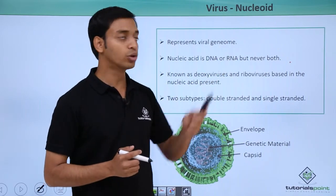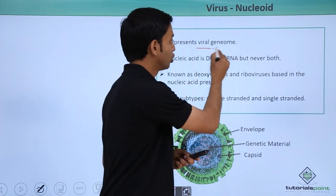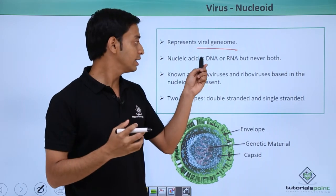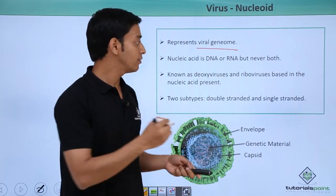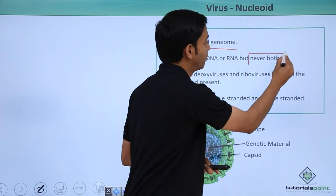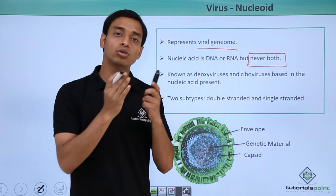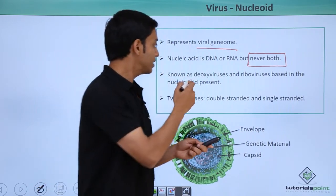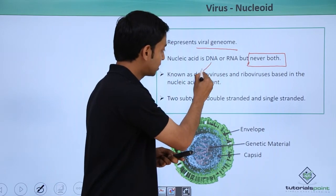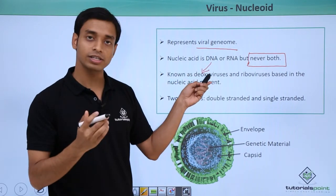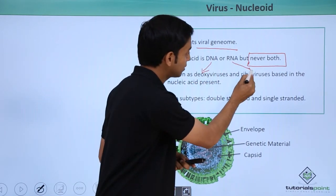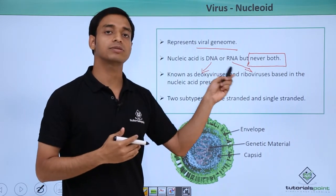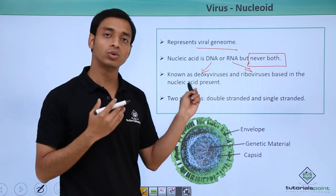The first component is the nucleoid, which represents the viral genome. This genome is comprised of either DNA or RNA, but a very important point is never both — a virus cannot have both DNA and RNA as their genetic material. Viruses with DNA are known as deoxy viruses, and those with RNA are known as ribo viruses.